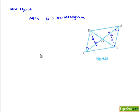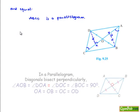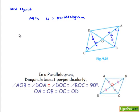Now we know that in a parallelogram, diagonals bisect each other. Therefore O divides AC in the 1:1 ratio, so OA is equal to OC.